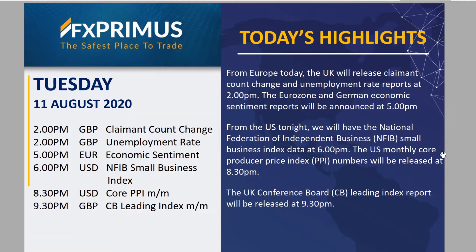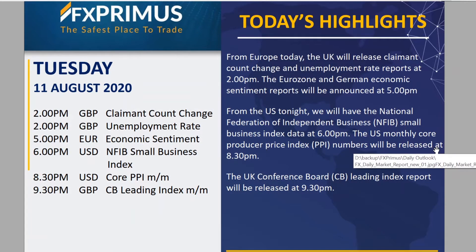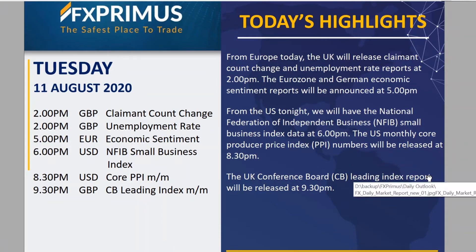Moving to 5 pm, we will be having the ZEW economic sentiment data coming out for the Eurozone and also for Germany, both at 5 pm. Towards 6 pm, we will be having the National Federation of Independent Business Small Business Index from the US. At 8:30 pm, we will have the core producer price index numbers, and the final economic data for today will be the Conference Board leading index numbers, released at 9:30 pm.